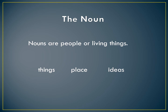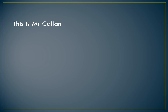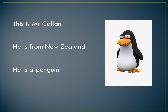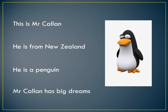Let's put that into action. I'm going to quickly show you four sentences. Let's start with number one: 'This is Mr. Callan.' There is a picture of Mr. Callan. 'He is from New Zealand.' 'He is a penguin.' 'Mr. Callan has big dreams.' I want to take these sentences and find the nouns in them using the test. The test is: is it a person or living thing, a place, a thing, or an idea? So you look at the words and ask: is there a person or living thing, a place, a thing, or an idea?